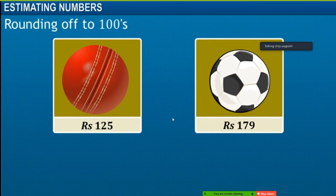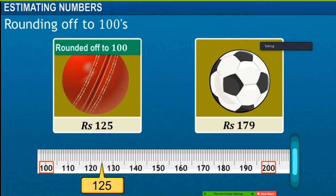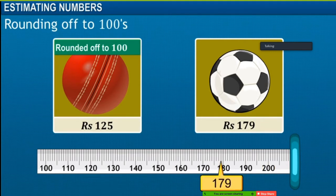Since 125 is closer to 100 compared to 200, it is rounded off to the nearest 100, that is 100. Whereas 179 is closer to 200 than to 100, hence it is rounded off to the nearest 100, which is 200.